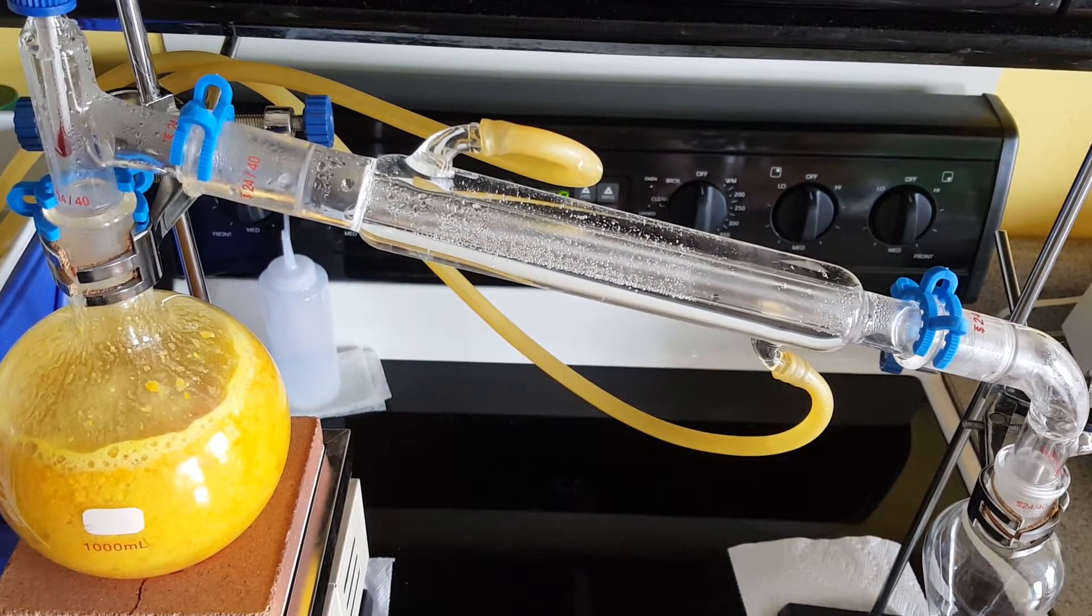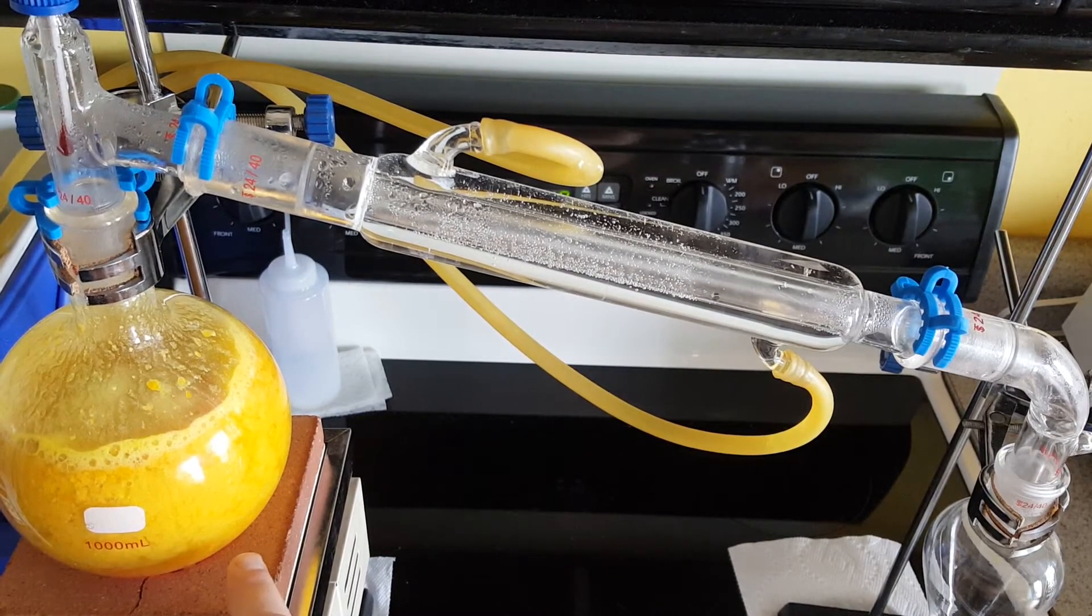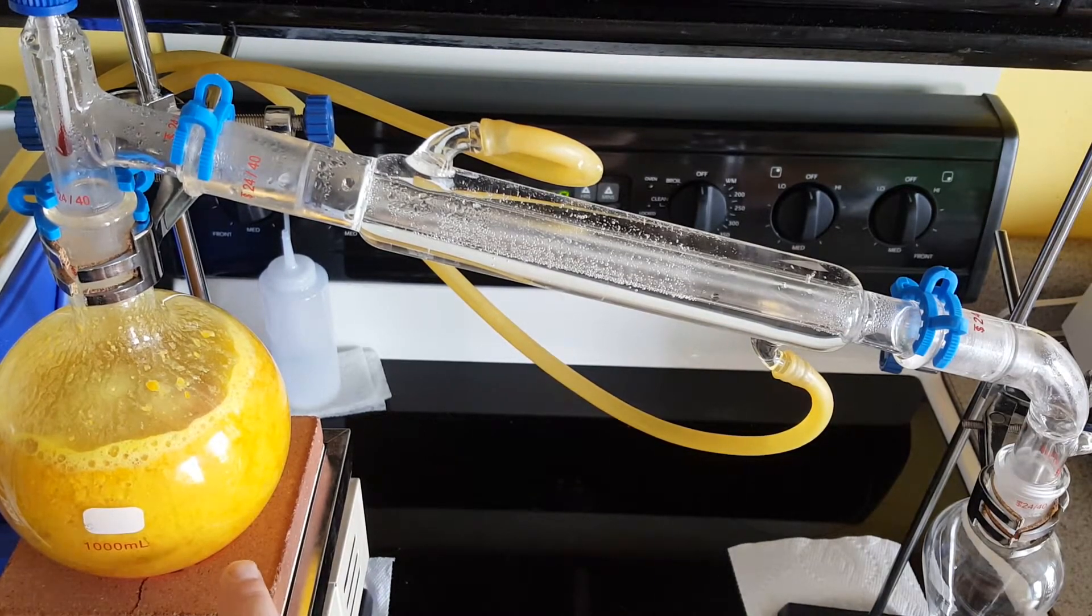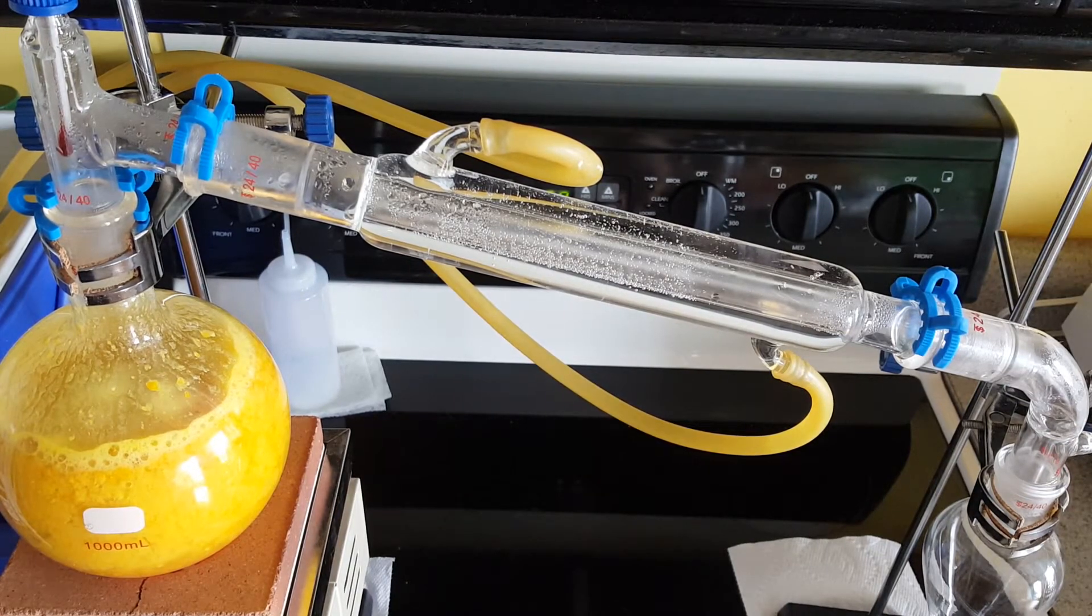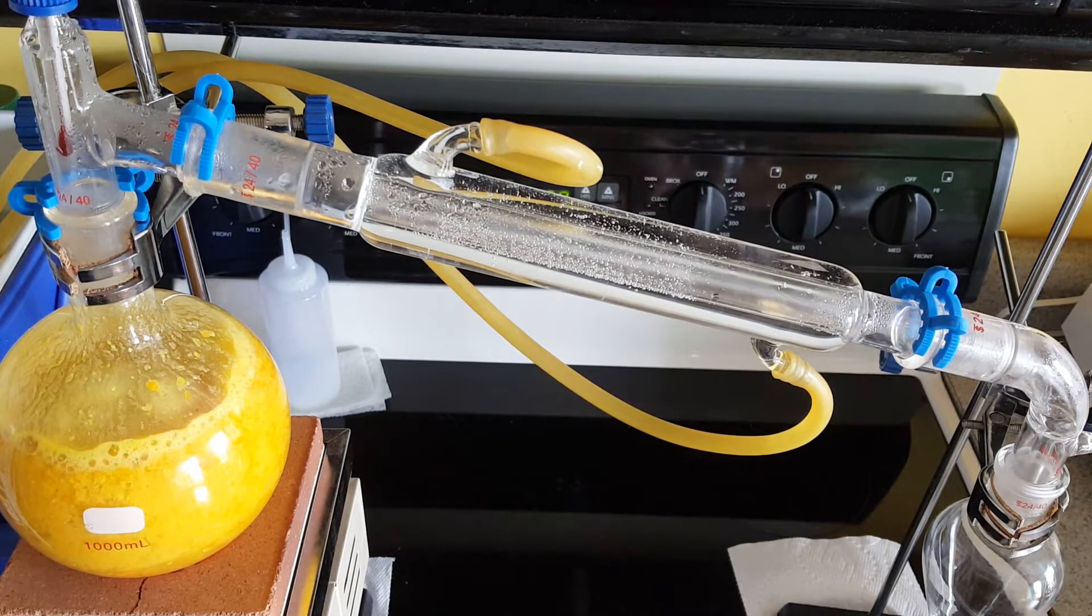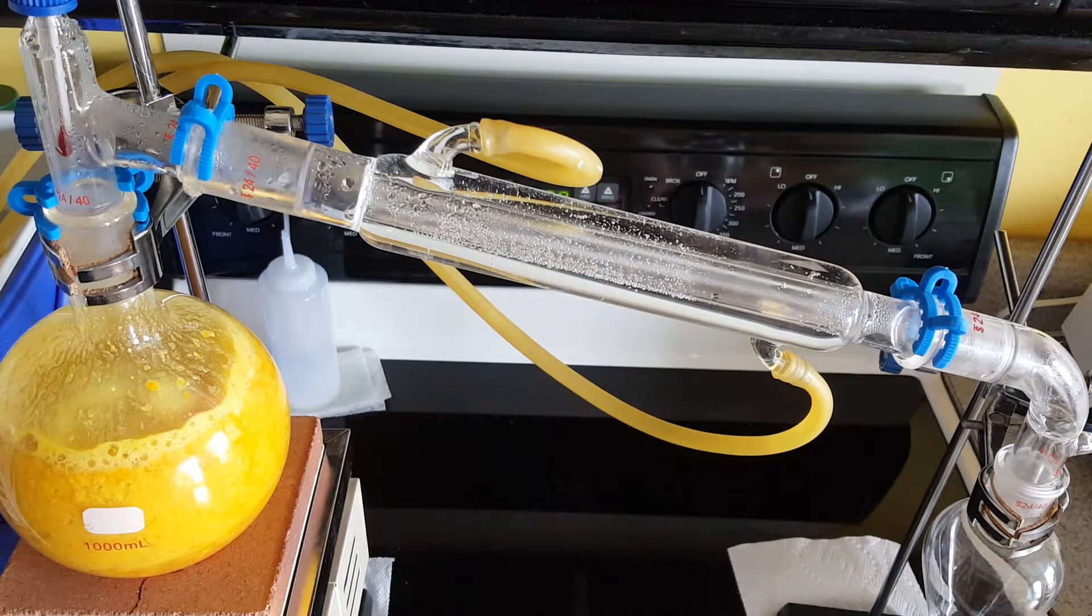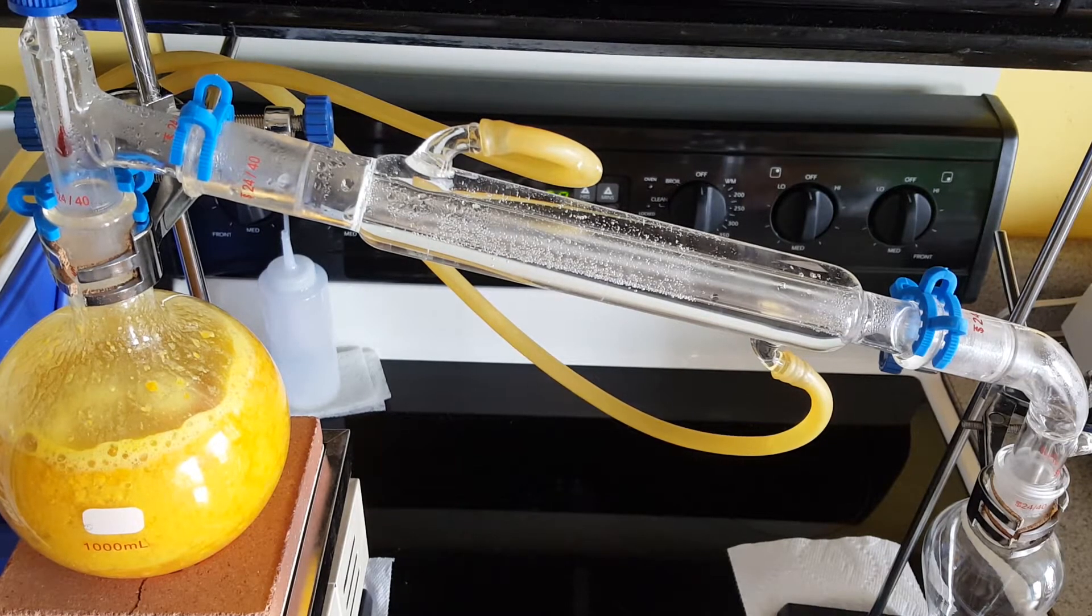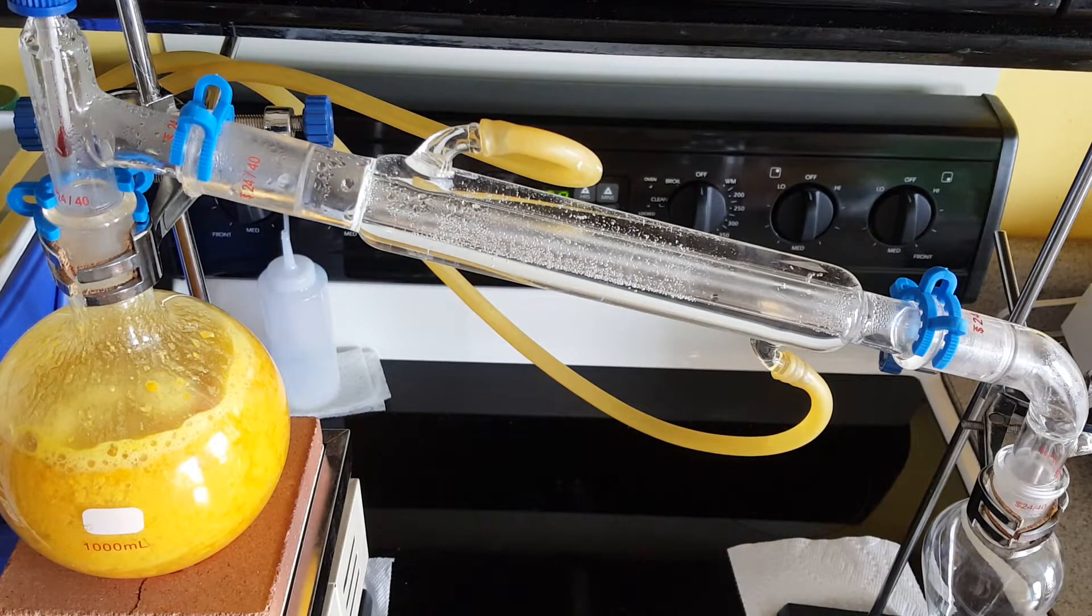For a while I saw bubbling going on on the bottom of my flask but the bubbles would just rise up a little bit and then disappear. I'm guessing the vapor that created the bubbles would cool down and liquefy. Now slowly I see some bubbles beginning to escape to the top and there's some motion in the flask as liquid flows up and down as it heats and cools down.